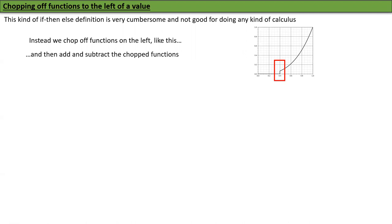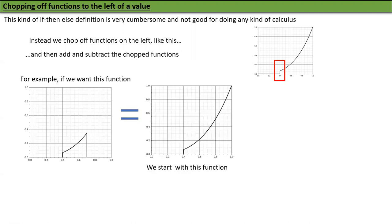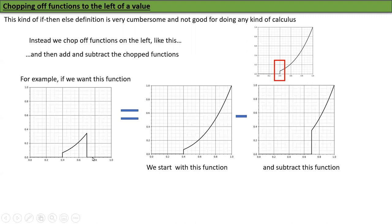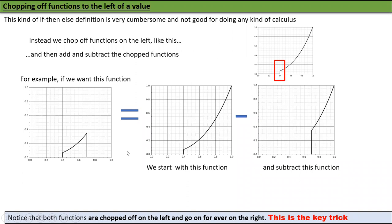For example, suppose I want a function that has a piece and then is chopped off on two sides. I first chop off the left-hand side here, and then subtract from it something chopped off at the other point. If I take one chopped function and subtract another, I get just that piece. Notice that both functions I am using are chopped off only at the left and then go on forever to the right. This is a key trick — if you can do this, you can do anything. This is how singularity functions work.